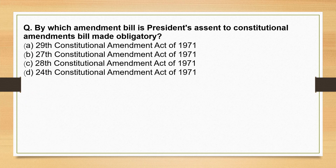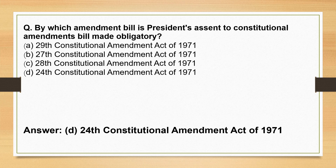By which Amendment Bill is the President's assent to Constitutional Amendment Bills made obligatory? This was the 24th Constitutional Amendment Act of 1971. This Act enabled Parliament to dilute fundamental rights, passed by the Congress government headed by Indira Gandhi, and came into force on 5th November 1971.